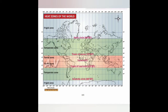The frigid zone lies between the Arctic Circle and the North Pole, and between the Antarctic Circle and the South Pole. This is also known as the polar region, which is always extremely cold with very low temperatures throughout the year and is always covered with snow. So the three heat zones are: torrid zone (maximum temperature), temperate zone (moderate temperature), and frigid zone (extremely cold).